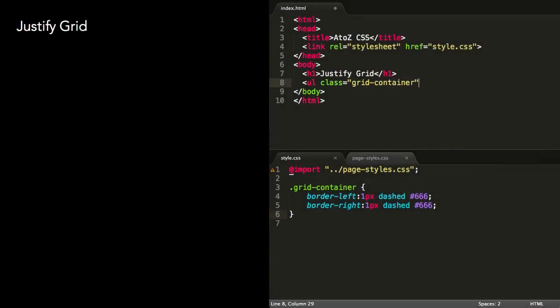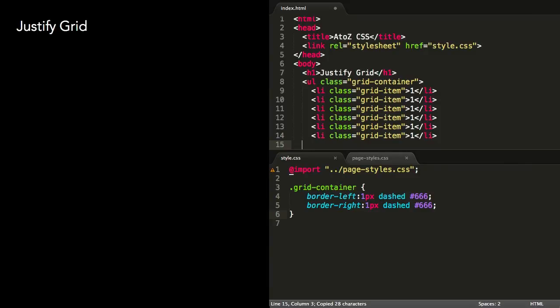I'll create an unordered list with a class of grid container, with six list items inside to act as grid items.